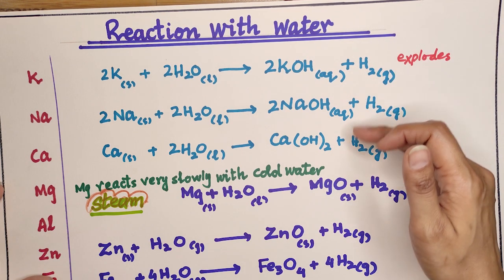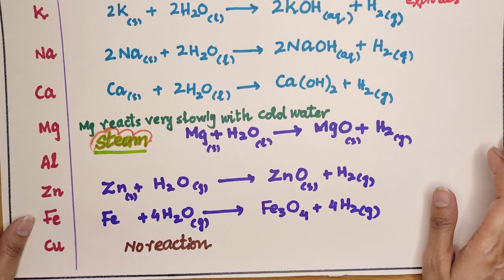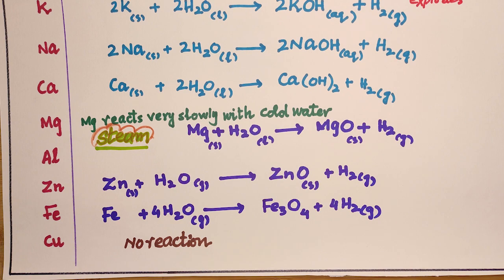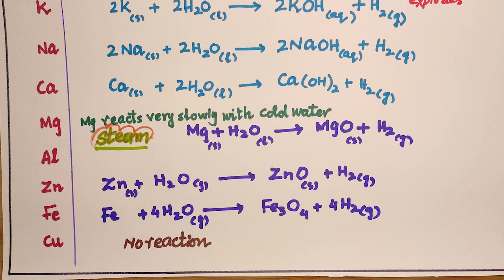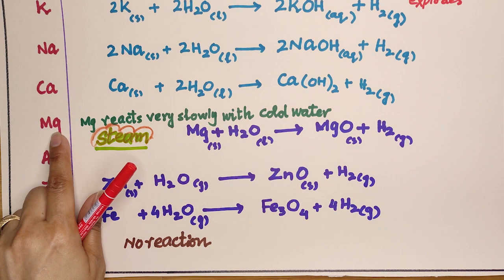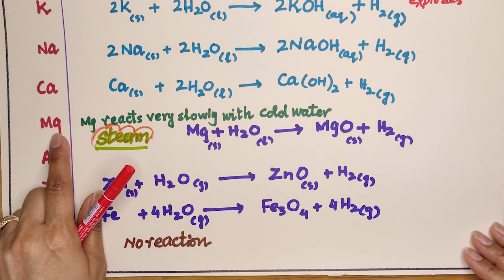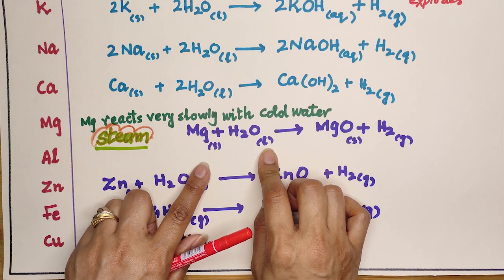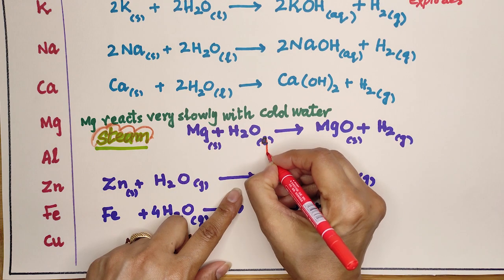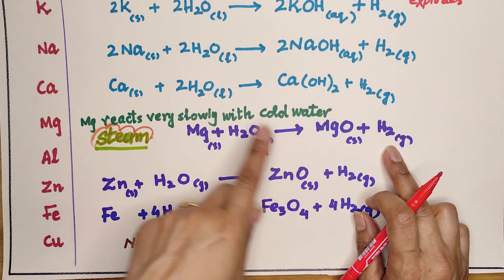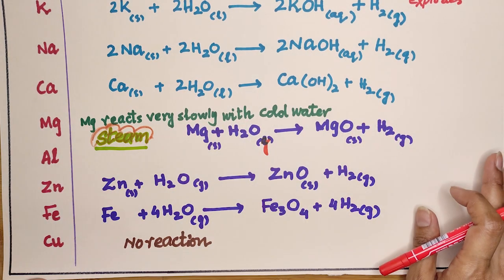As we move down the series, reactivity decreases. Magnesium reacts very slowly with cold water — it can take a few days and produces a few bubbles of hydrogen gas, giving magnesium hydroxide solution. However, magnesium burns to produce magnesium oxide when reacted with steam. With steam, the product is a metal oxide; with cold water, the product is a metal hydroxide.